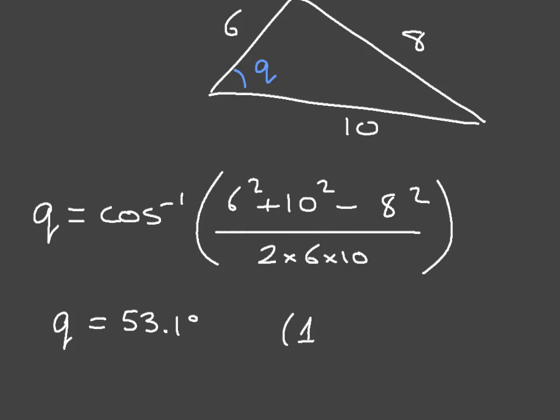And there you have it — that's how you use the cosine rule to find unknown angles in a triangle.